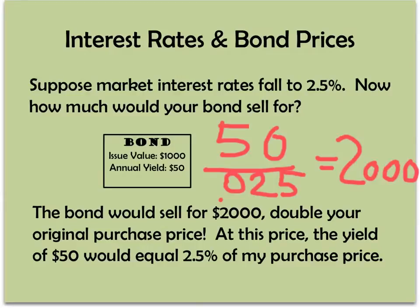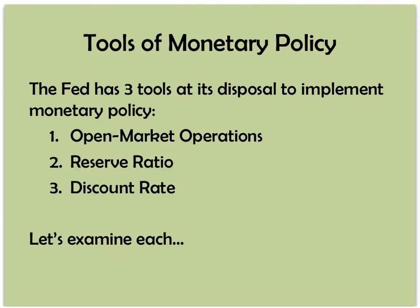So who said bonds are boring? You can buy and sell bonds and make a lot of money depending on interest rate movements, although they're very difficult to predict. To summarize: interest is the price you pay for money; it has an inverse relationship with the money supply; and it also has an inverse relationship with bond prices. The Fed's primary purpose is to conduct monetary policy — raising and lowering the money supply — and they have three tools: open market operations, reserve ratio, and the discount rate.